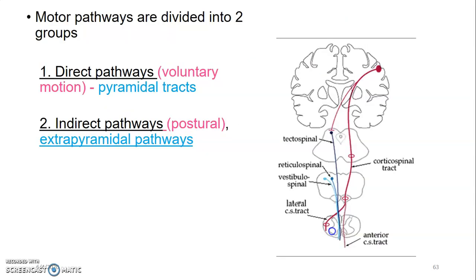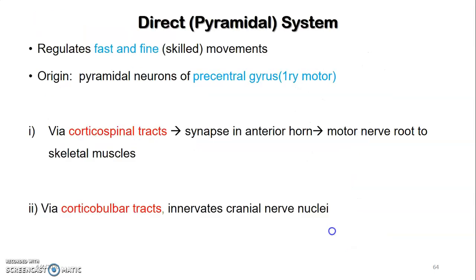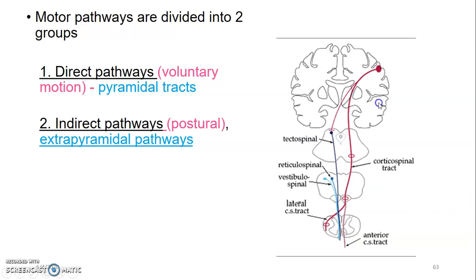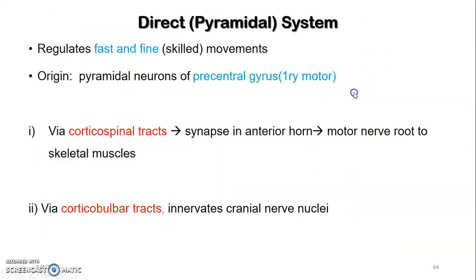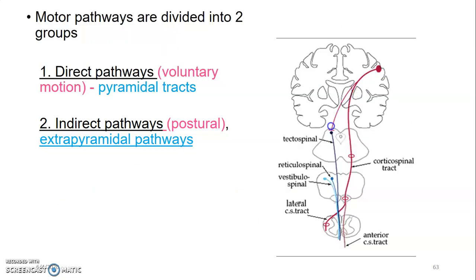Motor pathways are divided into two: pyramidal and extrapyramidal. Pyramidal pathways are the direct pathways responsible for voluntary motion, while extrapyramidal are the indirect pathways that maintain posture. Pyramidal pathways come from the cerebral cortex and control voluntary muscles. Extrapyramidal pathways come from different parts below the cerebral cortex — they could be tectospinal, reticulospinal, vestibulospinal, or rubrospinal.